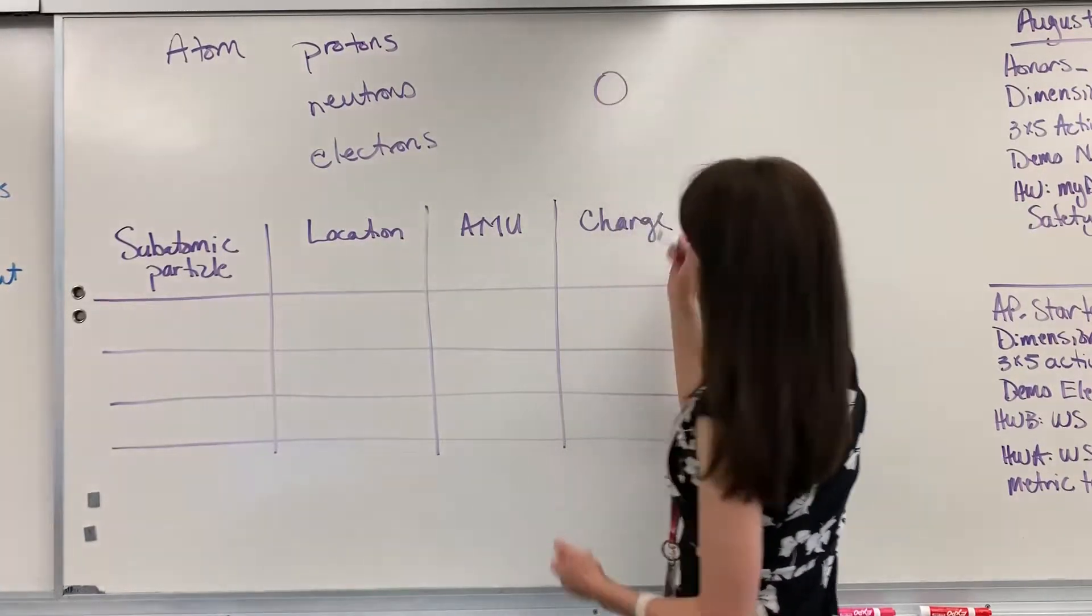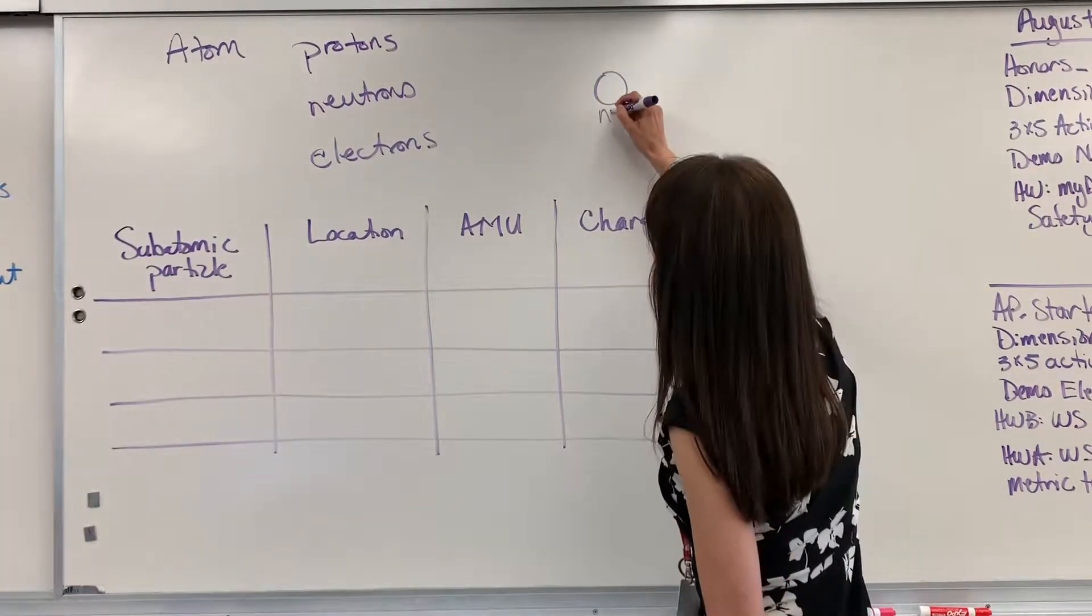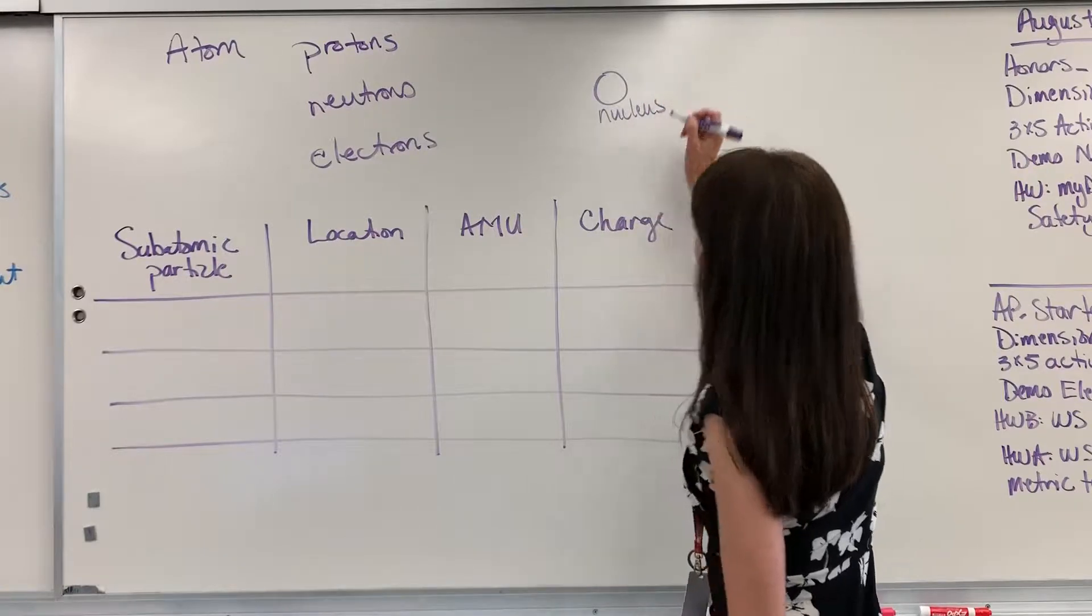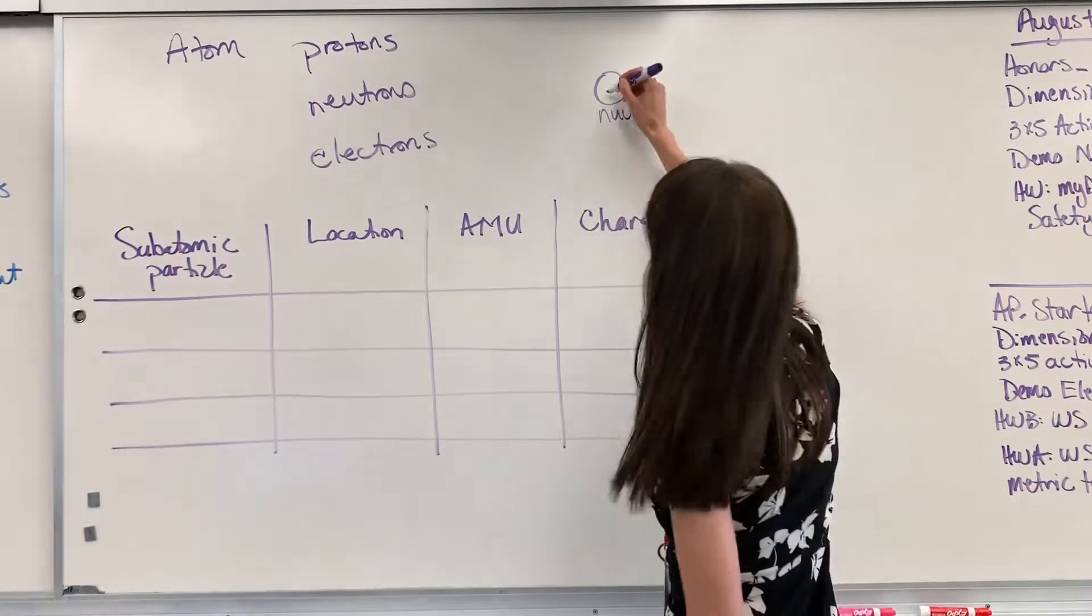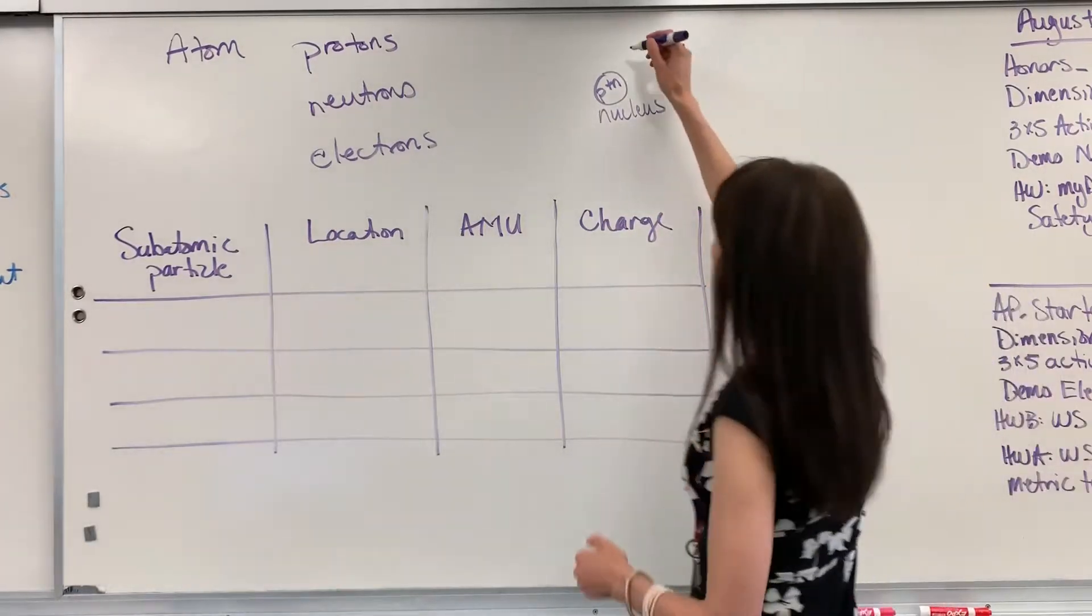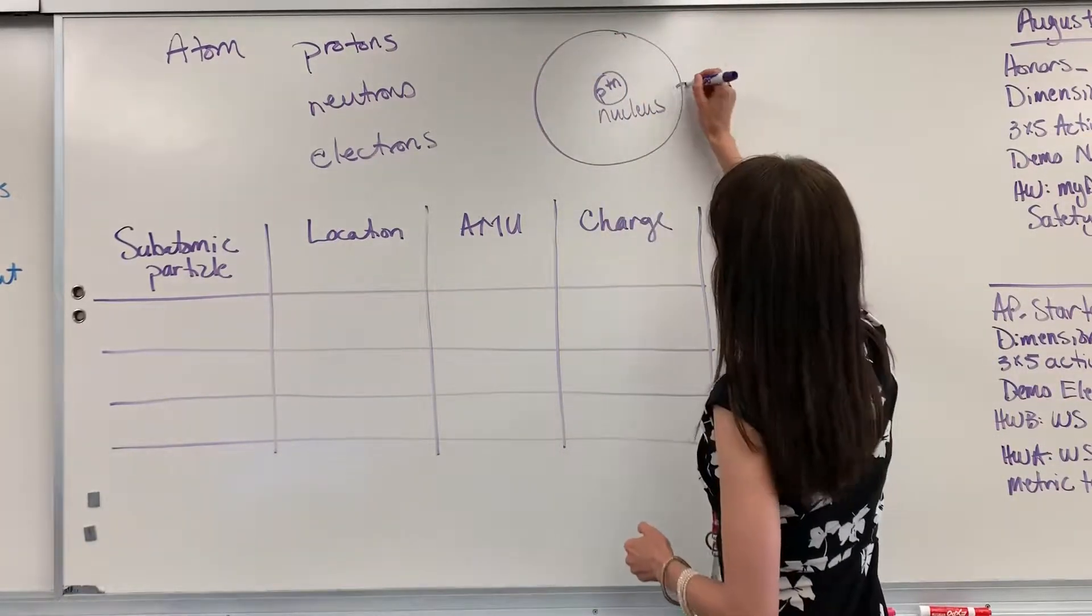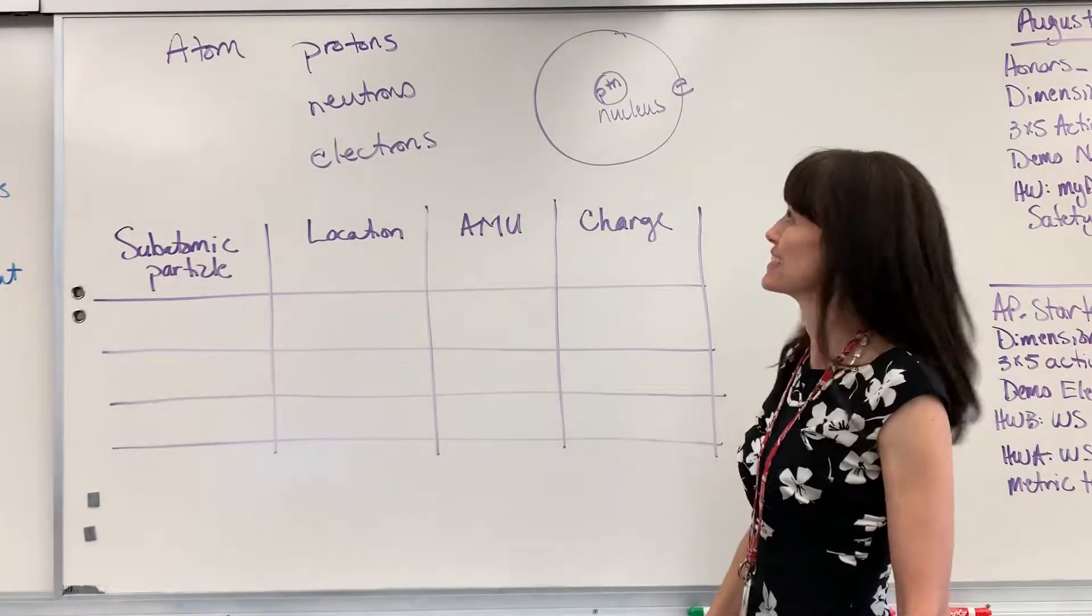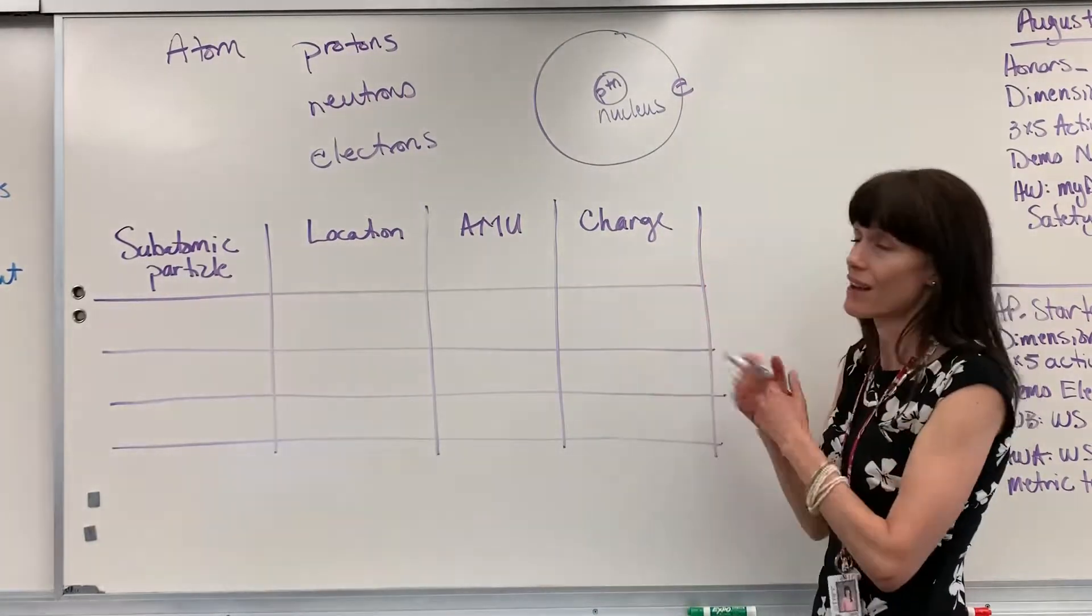We have the nucleus in the center, and inside the nucleus are protons and neutrons. Now outside of this are energy levels, the orbitals, and that is where the electrons exist.